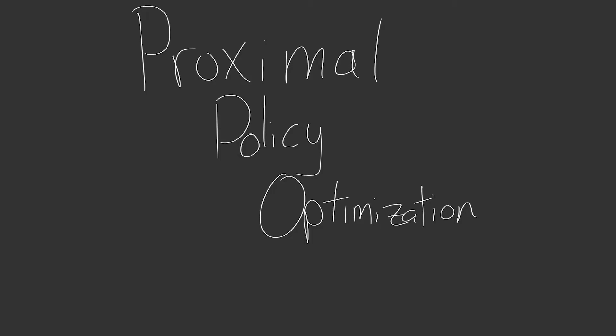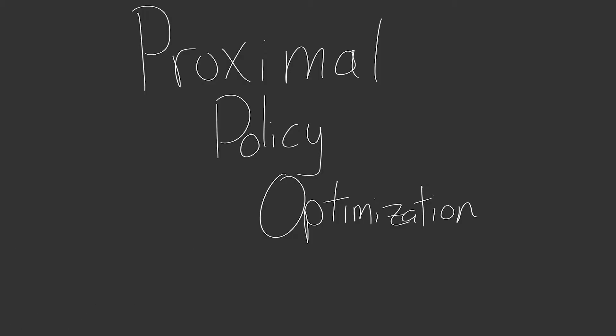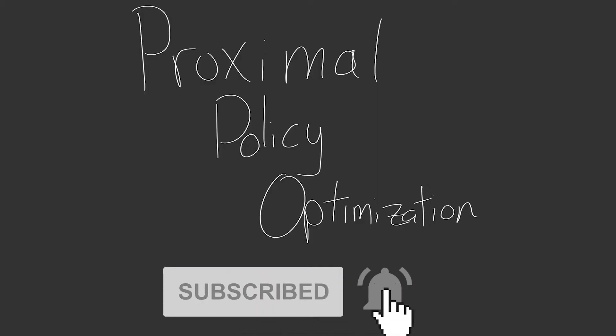Hello, everyone. Today, we are going to be talking about proximal policy optimization or PPO for short. PPO is a deep reinforcement learning method for learning in reinforcement learning situations. It's specifically a policy gradient method. If you don't know what that means, don't worry about it.